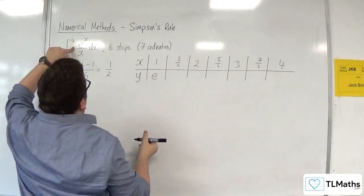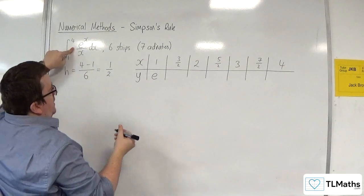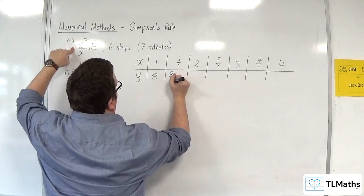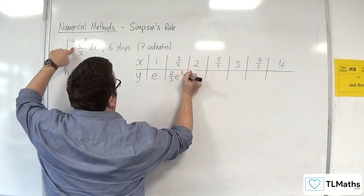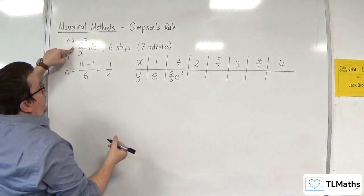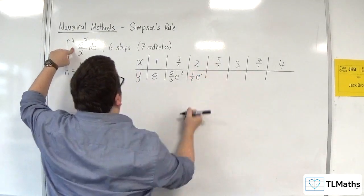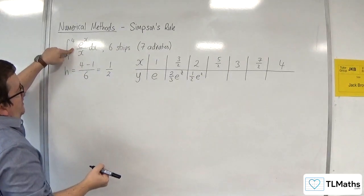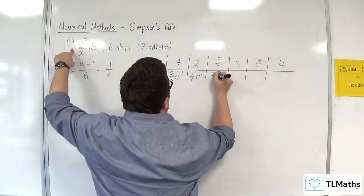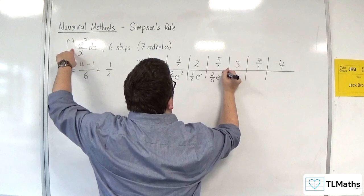Then e to the 3 halves over 3 halves, so 2 thirds e to the 3 halves. Then substitute in 2, we're going to get 1 half e squared. Substitute in 5 halves, we'll have 2 fifths e to the 5 halves.